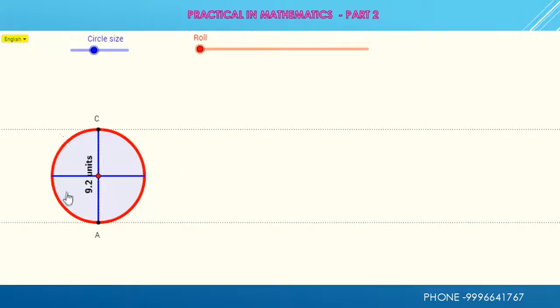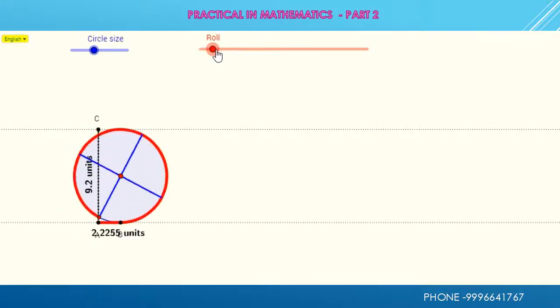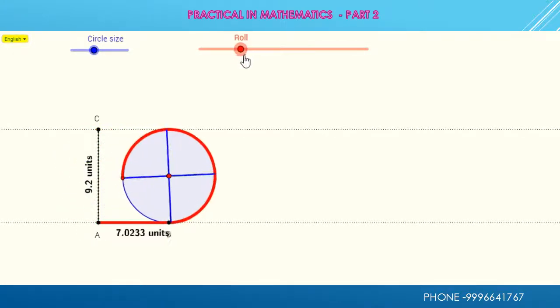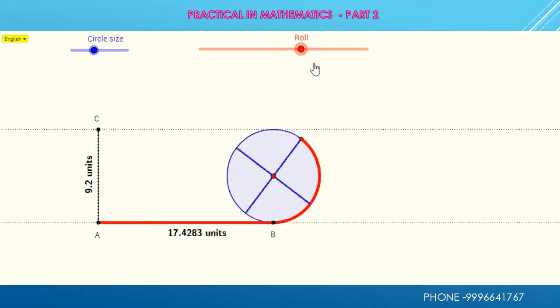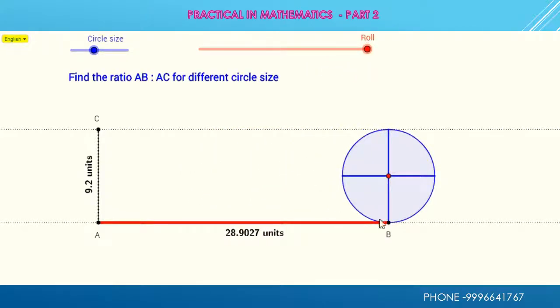Here I have this red color circle. First of all, I unfold the circle. As you see a very beautiful animation, I obtain the line AB. This line AB has length 28.9027. This length is equal to the perimeter of circle, because by unfolding this circle we get this line AB.